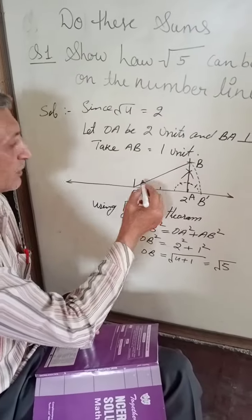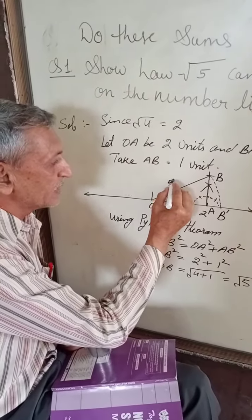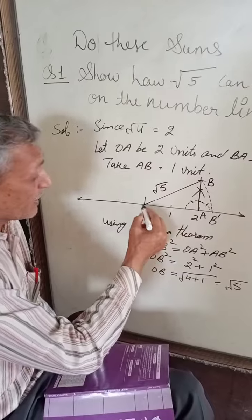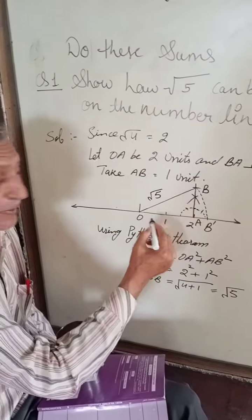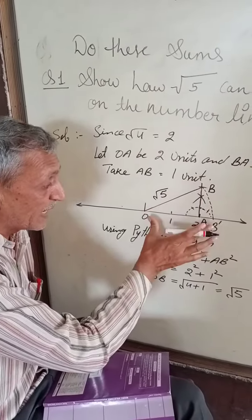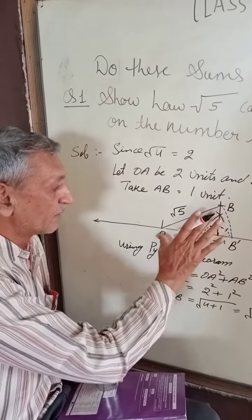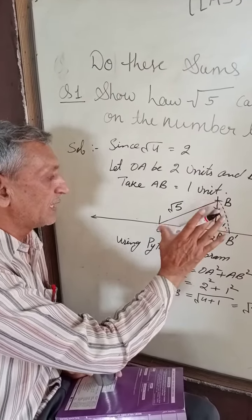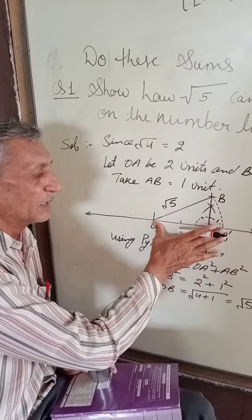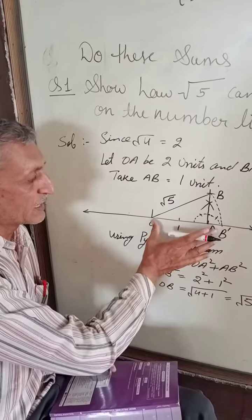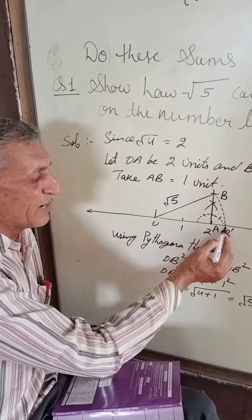See, this length is root 5. But we cannot leave it here because it was to be represented on the number line. This is the reason we have taken the length OB on the number line which is represented by OB dash.